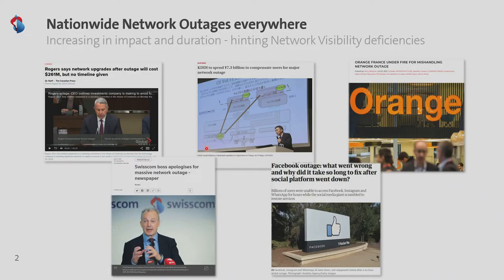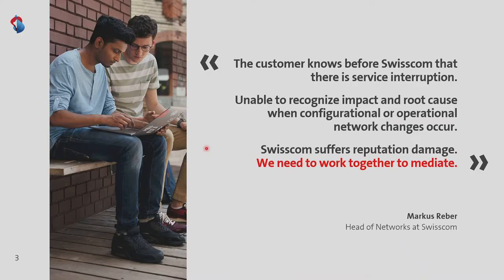These pictures you probably know from the media — more and more network operators are showing they are having network outages. What's interesting is that these outages, their intensity, impact, and duration are slowly increasing over time, hinting that we have challenges in network visibility. At Swisscom specifically, thanks to smartphones, the customer usually knows the service impact before we as an operator even recognize it. When changes happen in the network, whether configurational or operational, it's really hard to be faster than our subscribers, and therefore we suffer reputational damage.